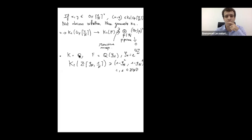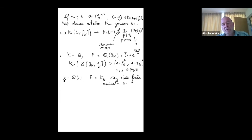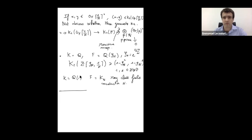For k equals Q(i), F would be the ray class field of conductor N — that's the analogue of the cyclotomic field for Q. It's an abelian extension of k with some properties. That's the arithmetic side of Sharifi's conjectures. Now let's describe the geometric side for k equals Q first.